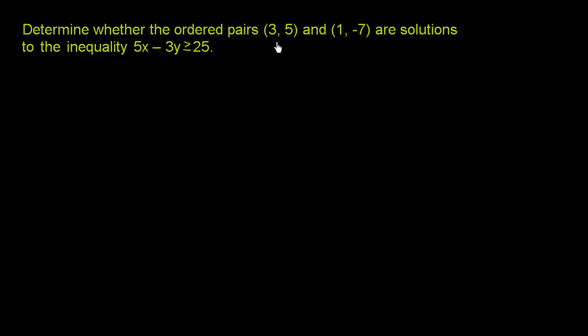Determine whether the ordered pairs (3, 5) and (1, -7) are solutions to the inequality 5x - 3y is greater than or equal to 25.